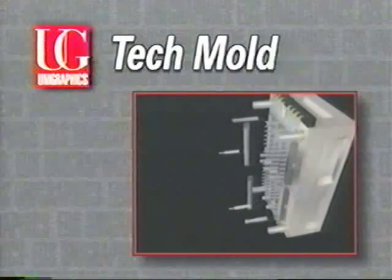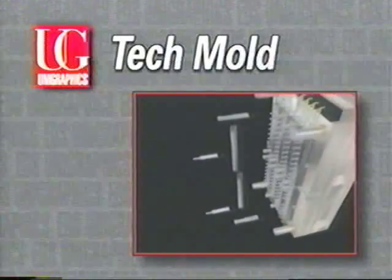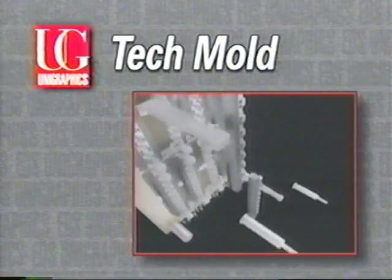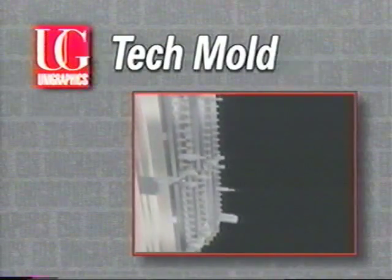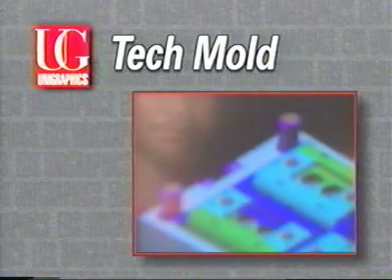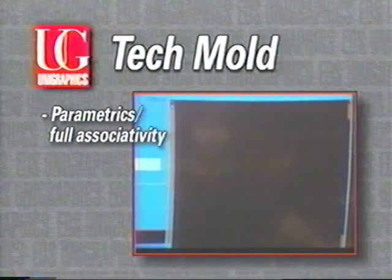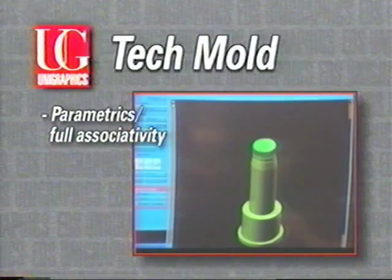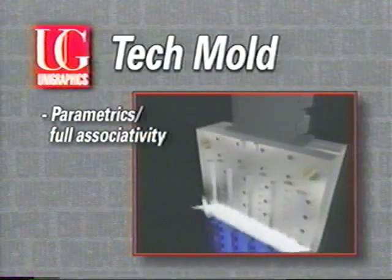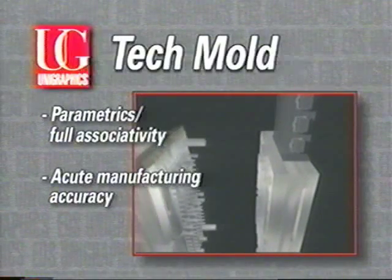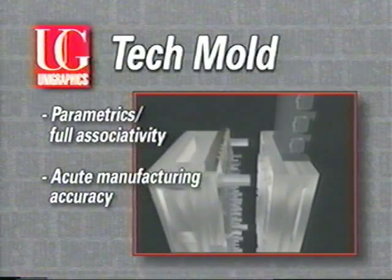Tech Mold uses Unigraphics for mold creation where dimensional accuracy, total component interchangeability, and standardization are critical customer requirements. UG's parametric capabilities and full associativity make changes at the design or manufacturing level easy. And Unigraphics' assembly features, such as mating conditions, have enabled acutely accurate manufacturing of components.